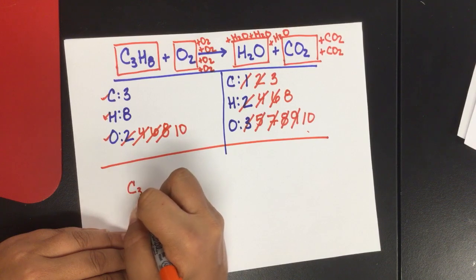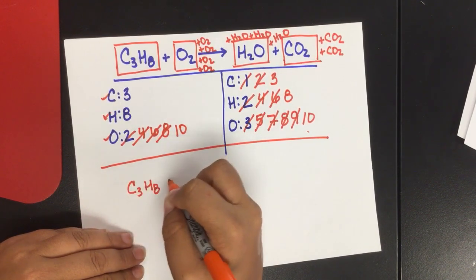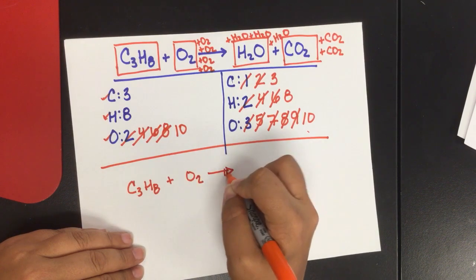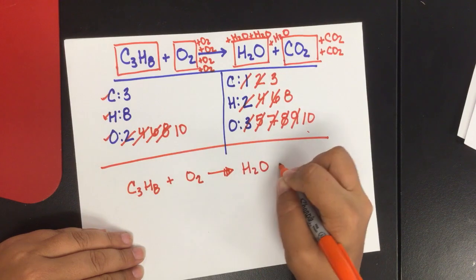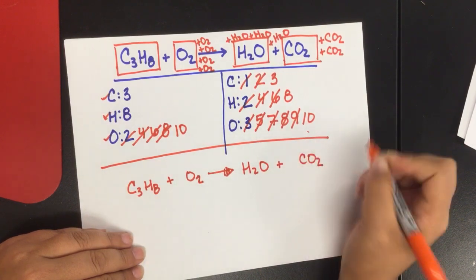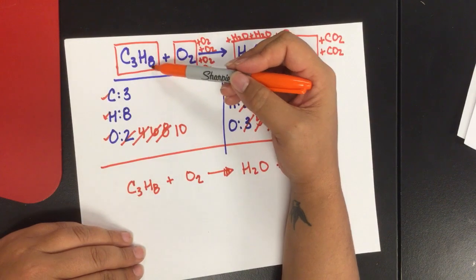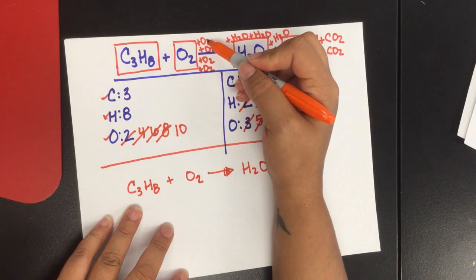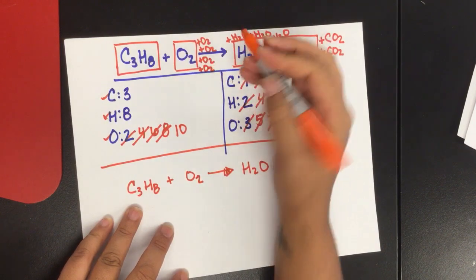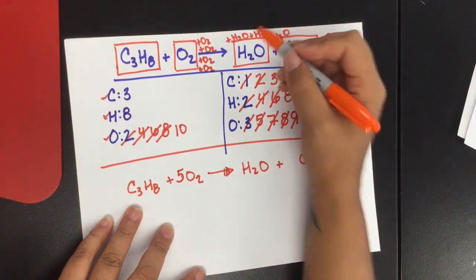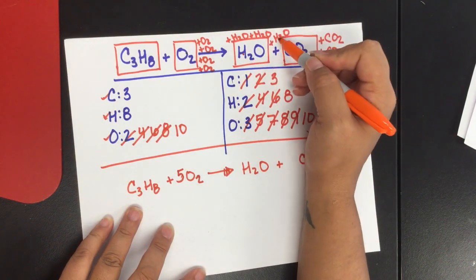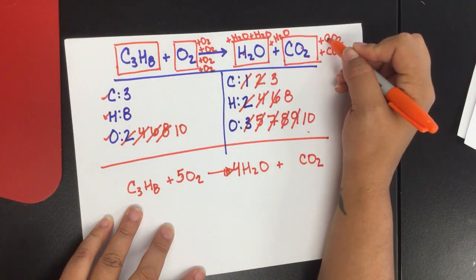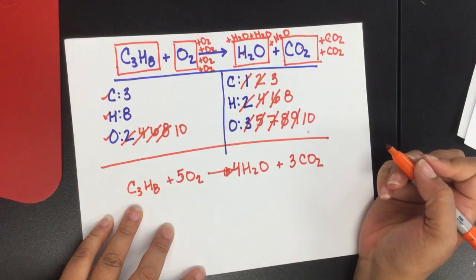Again, I'm going to write my equation just like my original. And then I go back up to the top. I only have C3H8 written once, so I'm going to leave that alone. I have one, two, three, four, five O2s. One, two, three, four H2Os. And one, two, three CO2s.